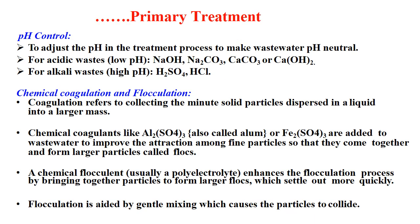Continuing about primary treatment: pH control is used to adjust the pH to make wastewater neutral. For acidic waste with low pH, we can use sodium hydroxide, sodium carbonate, calcium carbonate, or calcium hydroxide. When the water is alkaline with high pH, we can use sulfuric acid or hydrochloric acid.